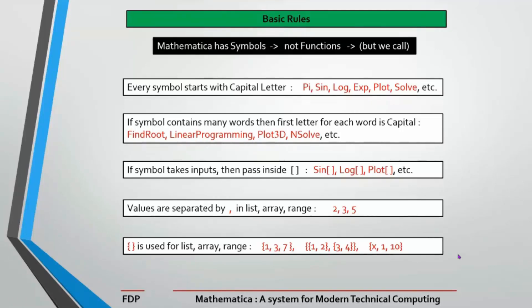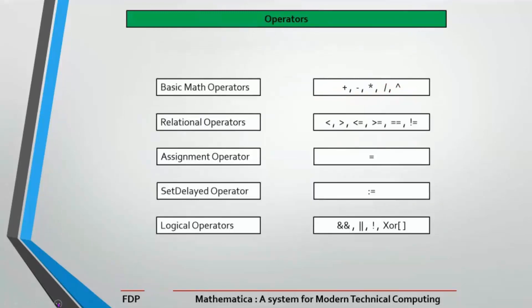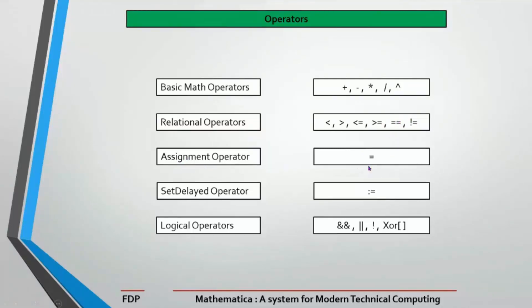Now let's talk about operators. Basic mathematical operators are: plus, minus, multiplication, division, and the caret (^) for power. Relational operators let you compare elements: less than (<), greater than (>), less than or equal (<=), greater than or equal (>=), and equal to (==) — note that equal-to uses two equals signs, not one.